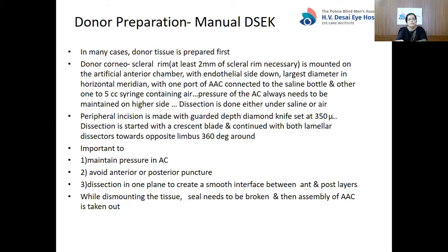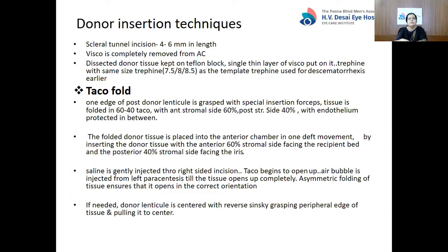While dismounting the tissue, the seal needs to be broken first and then the assembly of the AC is taken out to minimize endothelial cell loss. Coming to donor insertion techniques — usually a scleral tunnel incision 4–6 mm in length is made. All the visco is removed from the AC and further steps are carried out under either saline or air. The dissected donor is kept on a Teflon block. A single layer of visco is put on it, and a trephine of the same size used for the recipient Descemetorhexis template is used. Importantly, the donor and recipient size of the graft are the same — unlike in PK.